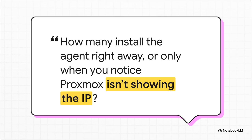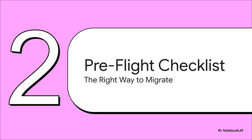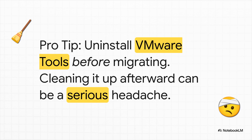As this user points out, it's almost a rite of passage — most people only realize they missed it when things start acting up. So don't feel bad; we've all been there. Now, before we even look at the checklist, here is the single most important tip I can give you: get rid of VMware Tools while the VM is still running on VMware. Trust me on this. If you forget and try to do it later on Proxmox, the uninstaller can break, leaving you to manually hunt down registry keys and services. It's a mess. Do it first.